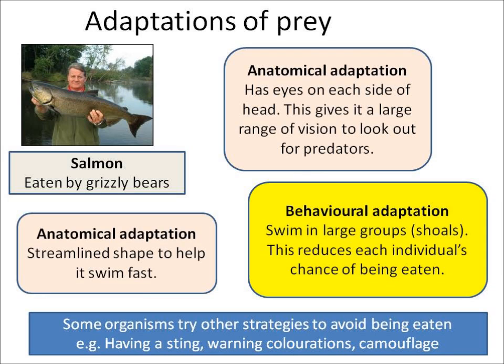There is also a behavioural adaptation of salmon: they swim in large groups, which reduces each individual's chance of being eaten. In addition to this, you need to know about some other organisms which have other strategies to avoid being eaten — some have a sting, some have warning colourations on their body such as stripes, and some are able to camouflage well so that they can't be seen by predators.